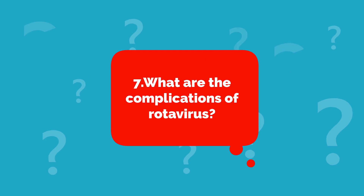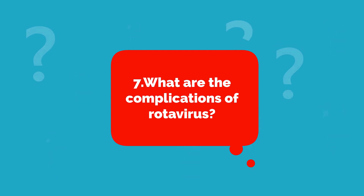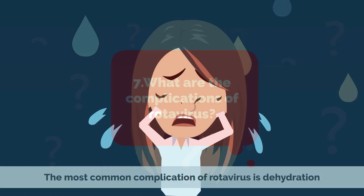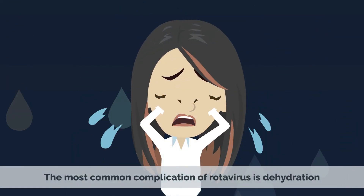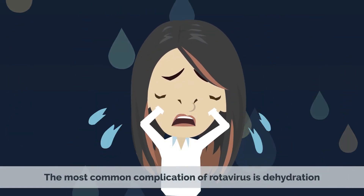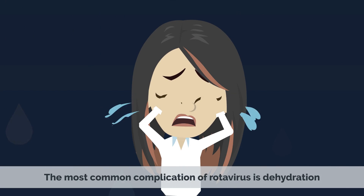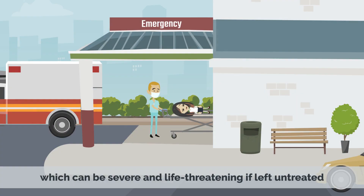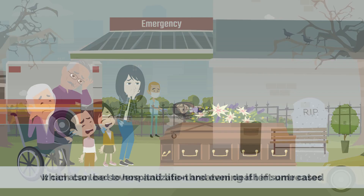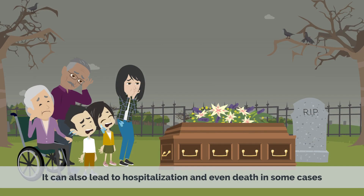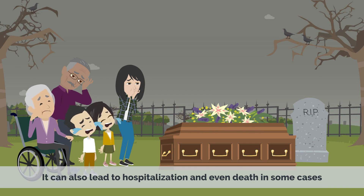What are the complications of rotavirus? The most common complication of rotavirus is dehydration, which can be severe and life-threatening if left untreated. It can also lead to hospitalization and even death in some cases.